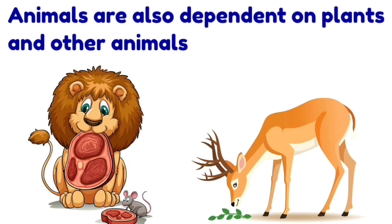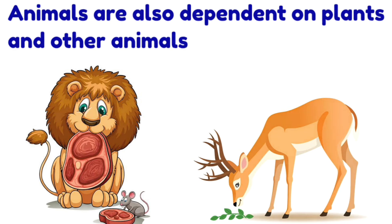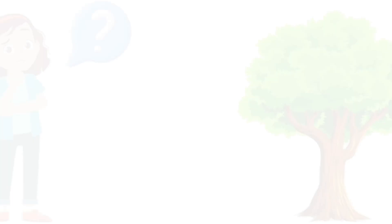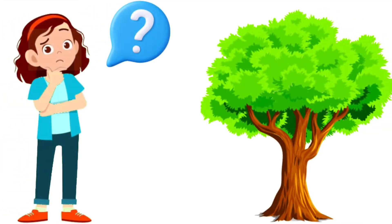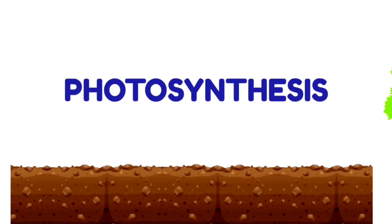Children, have you ever thought where do plants get food from? Plants are never dependent on other plants, animals, or even human beings for their food. Plants always make their own food with the process of photosynthesis.